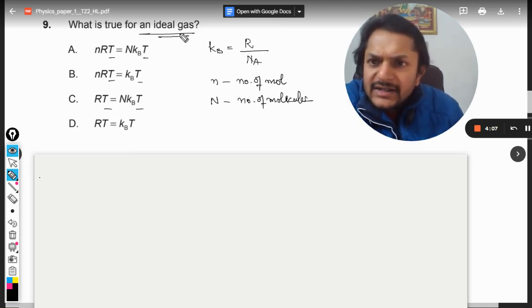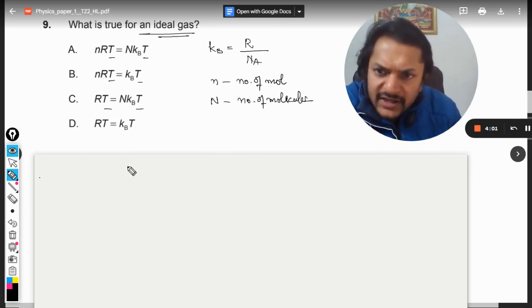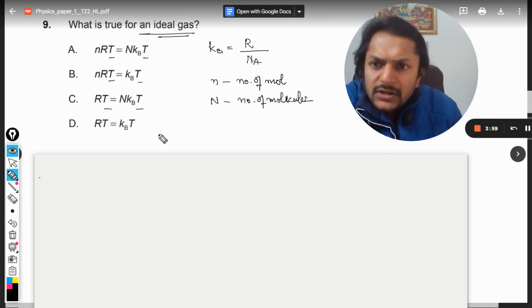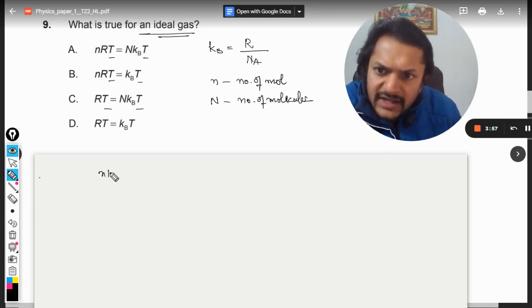So now let us see which equation is correct. We can substitute this. Let us have the first option: nRT is equal to capital N times KB times T. And this will be capital N is number of molecules.